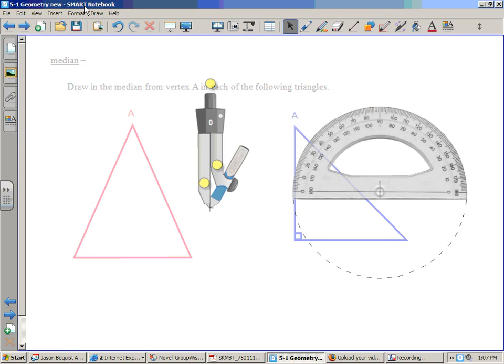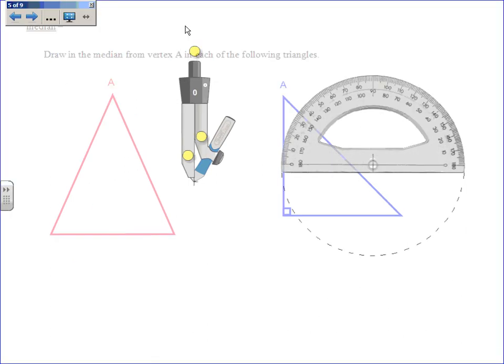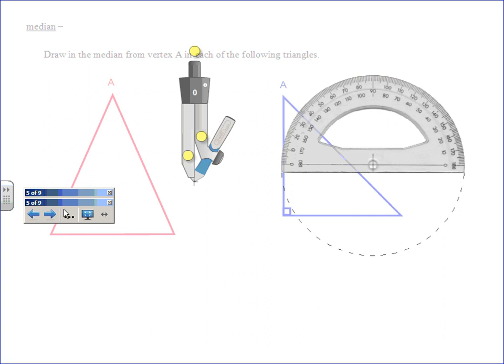So we'll try the two other segments today and they are called the median and the altitude. So the four total are angle bisector, perpendicular bisector, median and altitude.